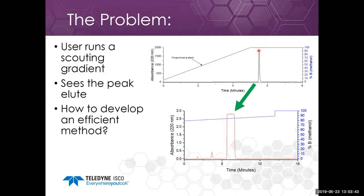See where the compound elutes and then tweak the gradient until they get a run that is good enough. That takes at least half a liter of solvents and 17 minutes for each attempt, or they will use the default gradient that might come with their prep system, and that might not have the required resolution or loading capacity, taking about 0.7 to a whole liter of solvent.